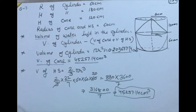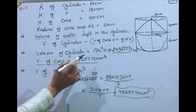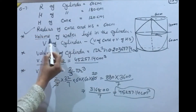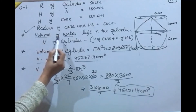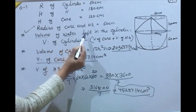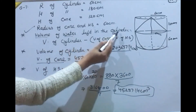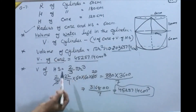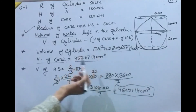Now, volume of water left in cylinder = Volume of cylinder − (Volume of cone + Volume of hemisphere). We add the cone and hemisphere volumes together and subtract from the cylinder volume.